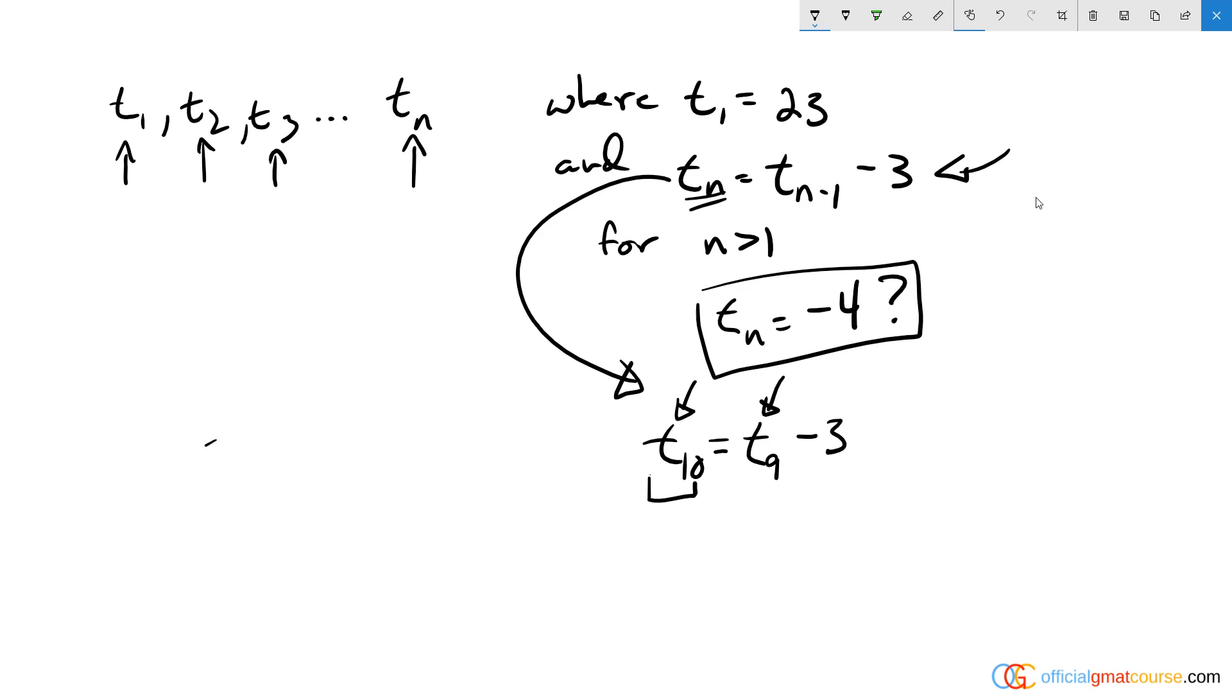For example, if I was drawing out multiples of 5 forever, t sub 1 would equal 5, t sub 2 would equal 10, t sub 3 would equal 15. And I could make up a rule where t sub n equals 5 times n, or t sub n equals t sub n minus 1 plus 5. Either one of these rules would work if I told you t sub 1 is equal to 5.